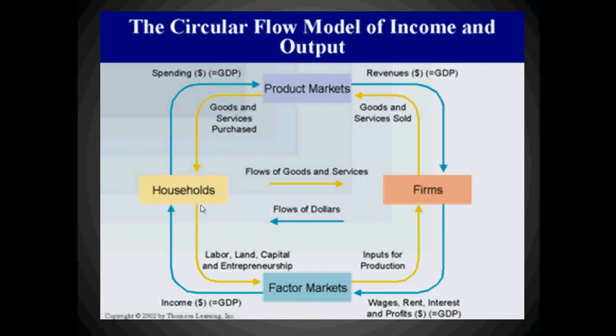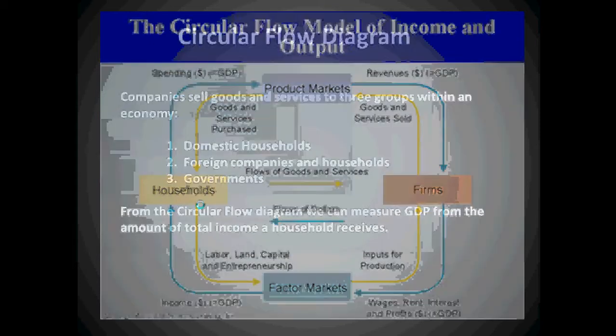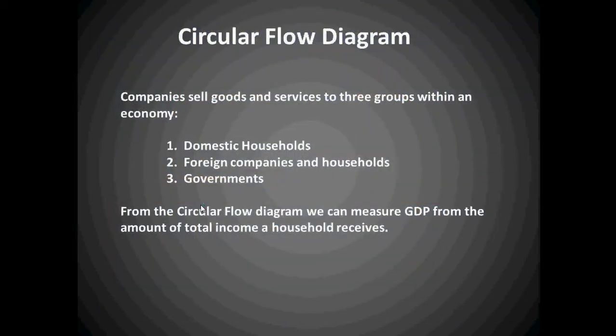Companies sell goods and services to three groups of the economy: domestic households, foreign companies and households, and governments. We can measure GDP from the amount of total income a household receives. Looking at the chart, we can measure total household income, which estimates how much products would be purchased for and how much needs to be produced.